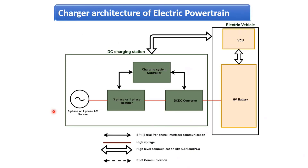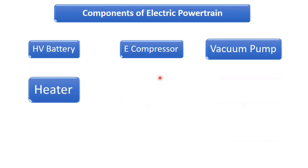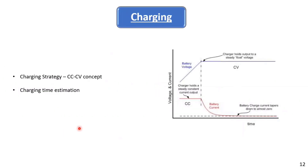In a slow charger, the three-phase AC power supply goes to a rectifier, which converts AC into DC. That DC goes to a DC-DC converter, which then feeds the high voltage battery pack. The current to the battery pack is controlled using a charging controller, and the charging mechanism used is called CC-CV — constant current, constant voltage charging.